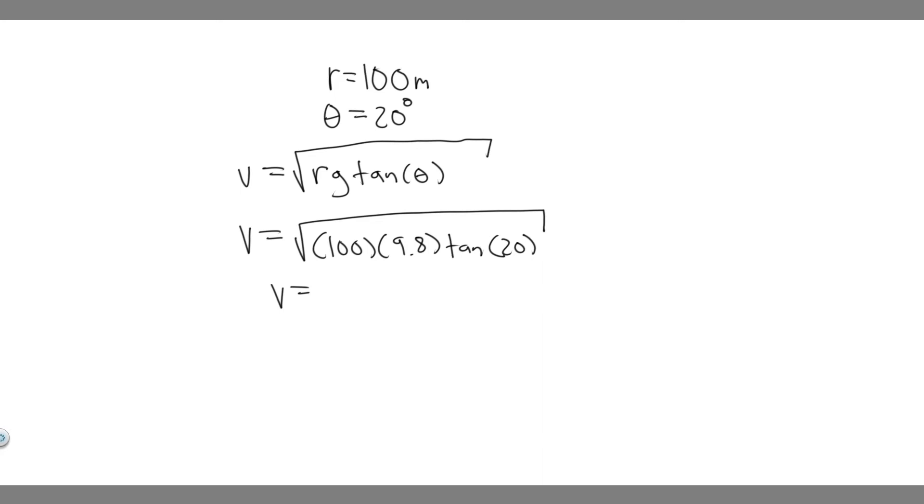And so what you want to do is just plug this in. So second square root, 100 times 9.8 times the tangent of 20. Make sure when you do this you're in degrees, because they give us the angle in degrees.